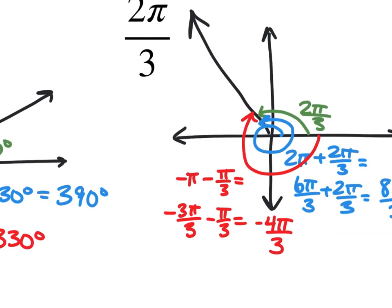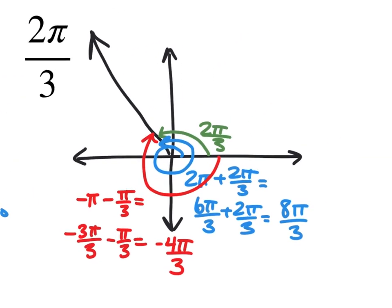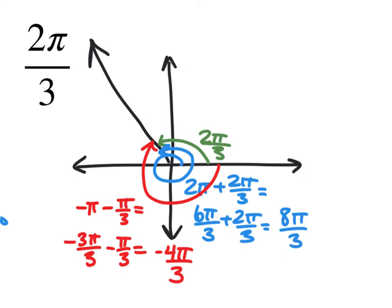In radians, to find two coterminal angles for 2π/3, first graph it — that's essentially 120 degrees. Going the positive direction means a full 2π revolution plus an additional 2π/3, which with common denominators is 6π/3 + 2π/3 = 8π/3. That's one coterminal angle.